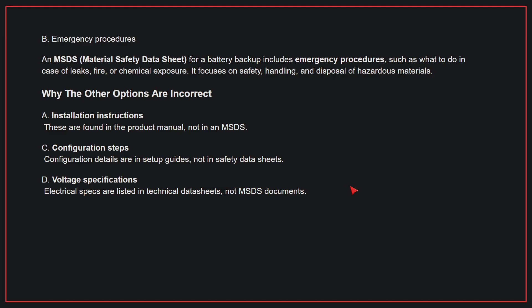Why the other options are incorrect: A, installation instructions — these are found in the product manual, not in an MSDS. C, configuration steps — configuration details are in setup guides, not in safety data sheets. D, voltage specifications — electrical specs are listed in technical data sheets, not MSDS documents. Therefore, the correct answer is B.